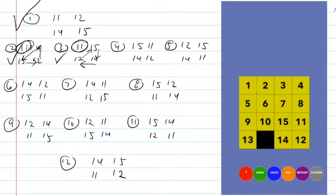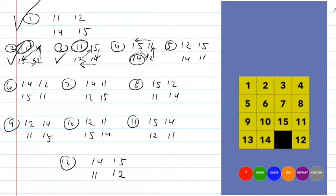In cases four and five, the fourteen is in the right spot — next to the thirteen — but the eleven, twelve, and fifteen need to be cycled. In case four, the eleven wants to go where the fifteen is, so it's a counterclockwise cycle. I bring the fourteen over to make room, do the three-cycle, then bring the fourteen back. That takes care of case four.